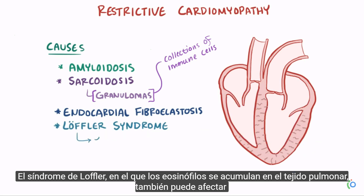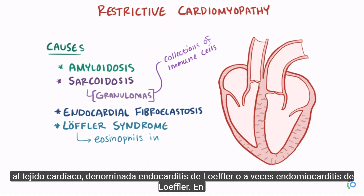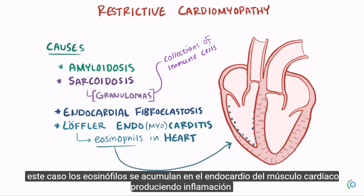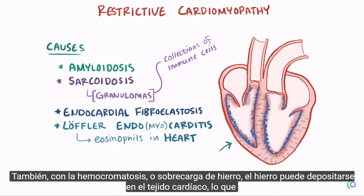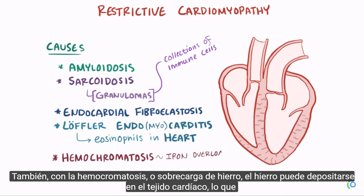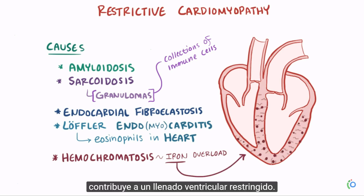Löffler syndrome, where eosinophils accumulate in the lung tissue, can also affect the heart tissue, called Löffler endocarditis, or sometimes Löffler endomyocarditis. In this case eosinophils accumulate in the endocardial layer of the heart tissue, causing inflammation and endocardial fibrosis, making it stiffer and less compliant. Also with hemochromatosis, or iron overload, iron can deposit in the heart tissue, which contributes to restricted ventricular filling.